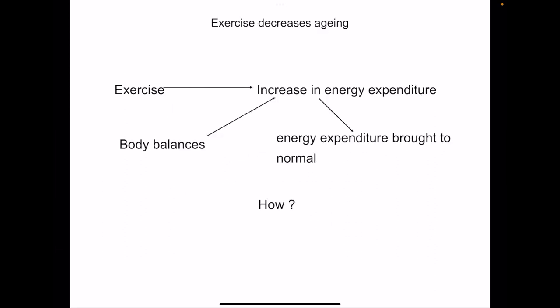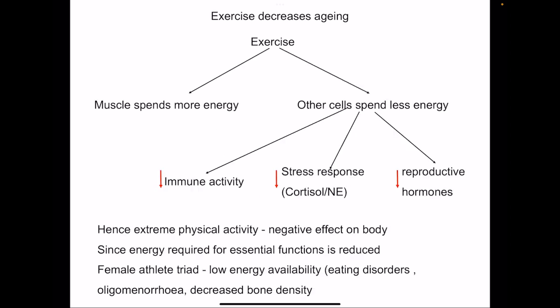We said that exercise decreases aging. Let's see how exercise decreases aging. When we exercise, there is increase in energy expenditure, but body balances everything. Whenever there is increase in energy expenditure, it decreases the metabolism of other cells. By decreasing metabolism of other cells, energy expenditure is brought to normal. That's why they say it's very difficult to lose weight just by exercising, because the increase in energy expenditure is balanced by decrease in energy expenditure in other cells. When that happens, there is decrease in stress response, decrease in reproductive hormones, and decrease in immune activity. With moderate exercise, these are not harmful; rather, the decrease in metabolic activity in the cell increases life span.